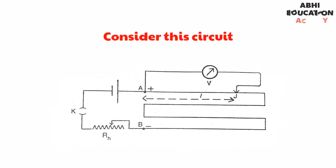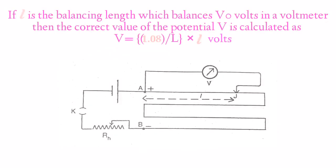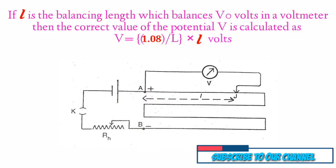Consider this circuit. If L is the balancing length which balances V zero volts in a voltmeter, then the correct value of the potential V is calculated as: V equals 1.08 per L into L volts.